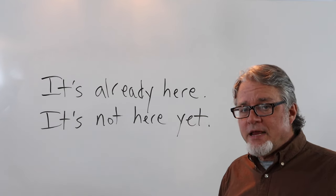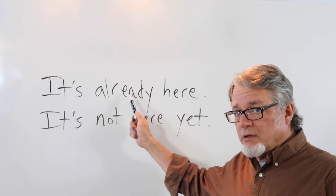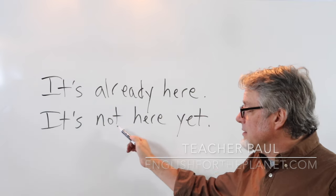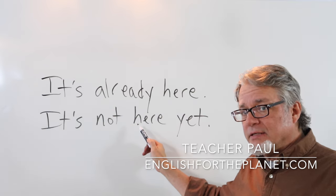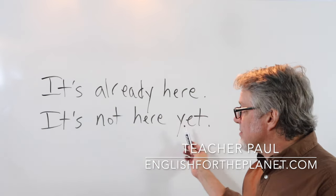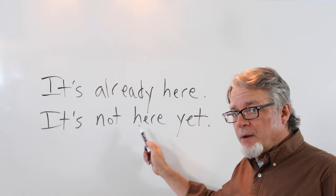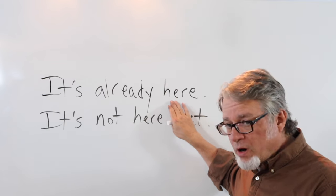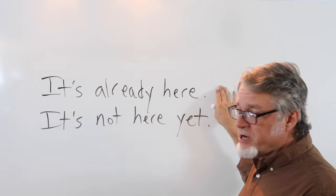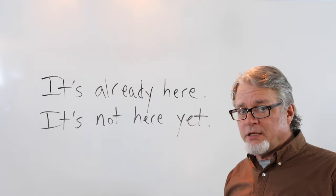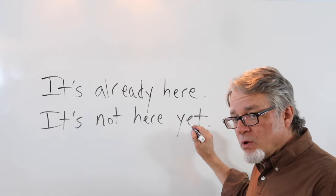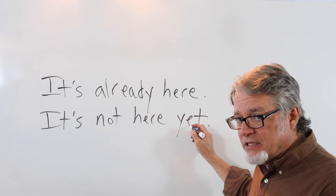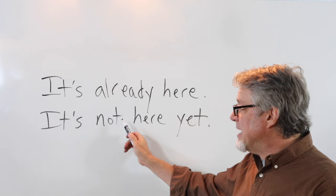It's already here. This is early or before an expected time. And it's not here yet. So something has not arrived up until now. Notice that already can appear before here or after here. You could also say it's here already. Yet will usually appear at the end of the sentence or at the end of a clause. It's not here yet.